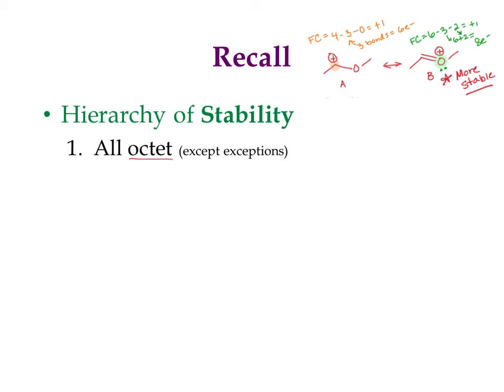Now, it doesn't have to be an octet in every case — there are exceptions. Some atoms can have fewer electrons, like hydrogen, and some can have more, like phosphorus and sulfur. Those exceptions are still allowed. But if a structure is not legitimate, it is not stable.